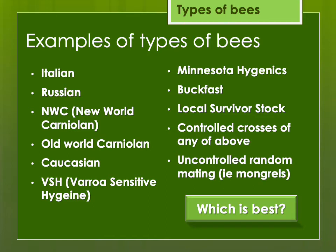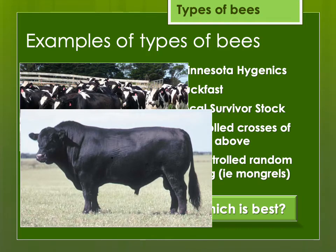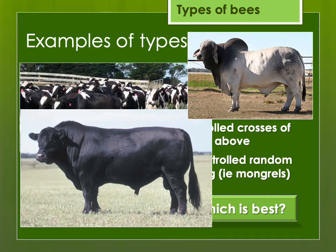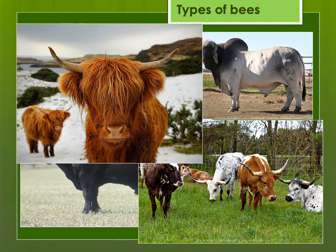If you ever go to a beekeeping meeting and ask what's the best type of bee, you're going to get a lot of strong opinions. Honestly, bees come in many types with no one best type for all beekeepers in all situations. Think about it with cattle — what's the best type of cow? Maybe this kind if you want to make lots of milk, or this kind if you're raising beef, or this kind if you're in a tropical area, or the Texas longhorn, or the Scotch Highland if you're up north. These are all useful breeds and which one is best depends on what you like, what you want, and what you're planning to do with them.